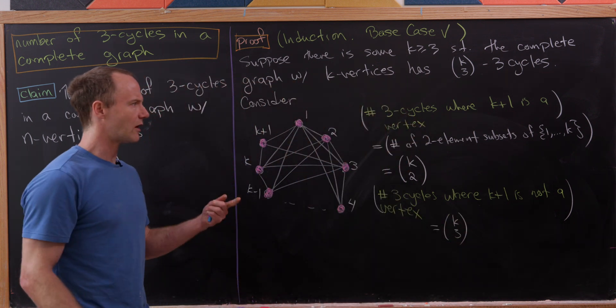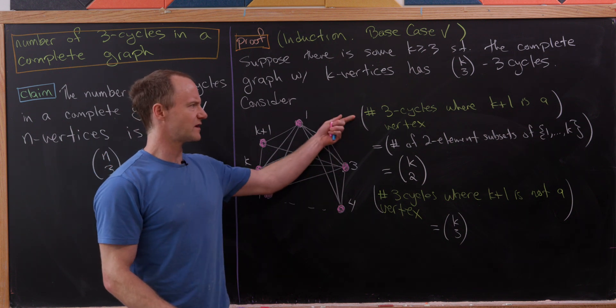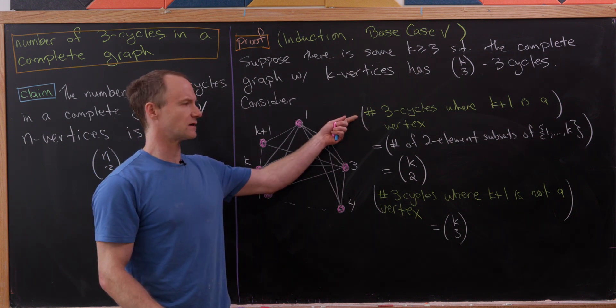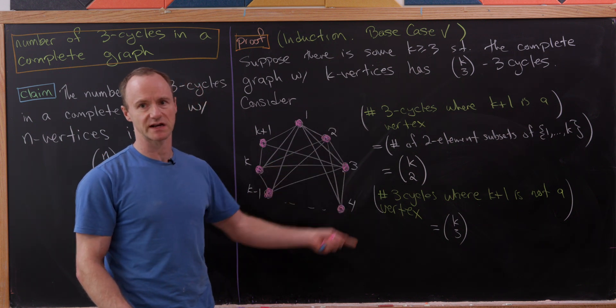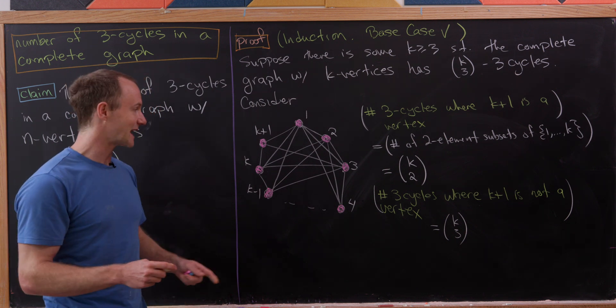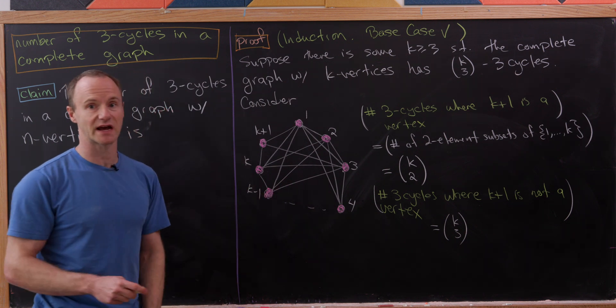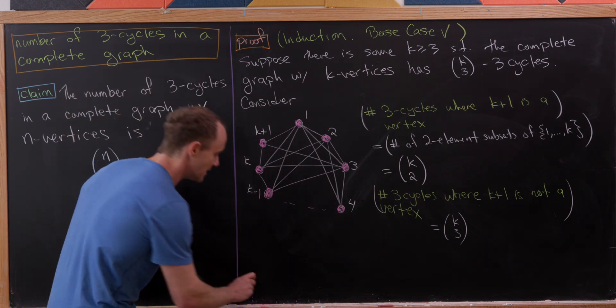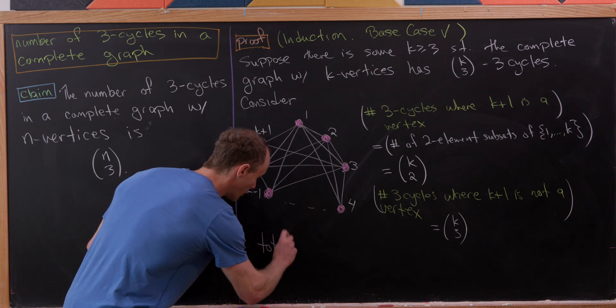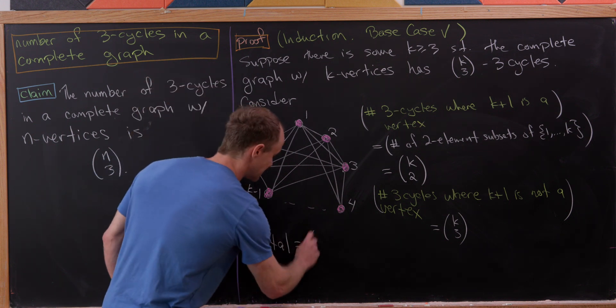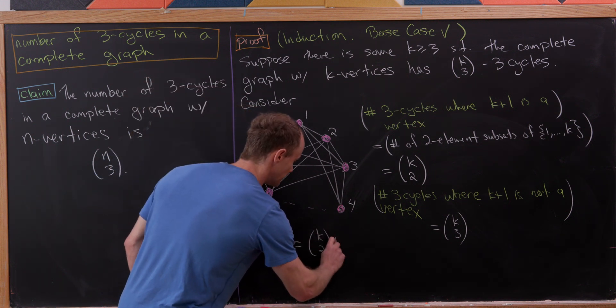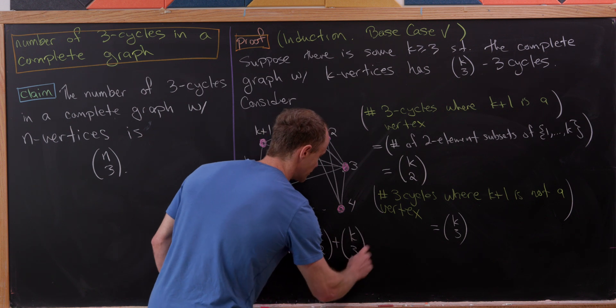Now notice that we have the number of three cycles where k+1 is a vertex and the number where it is not a vertex. This exactly counts all possible three cycles one time, meaning the total number is k choose 2 plus k choose 3.